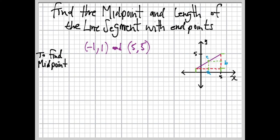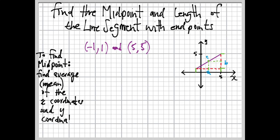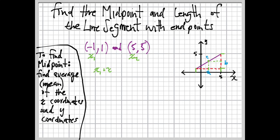To find the midpoint, find the average — or the mean — of the x-coordinates and then of the y-coordinates. We have x1 and x2, which are our x-coordinates: negative 1 and 5. To average them, we add them together and divide by how many there are — in this case, two. So x1 plus x2 divided by 2.